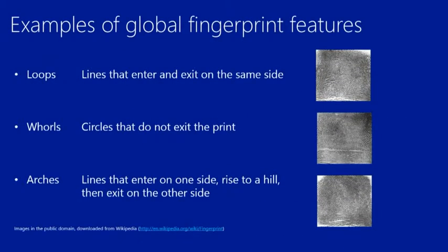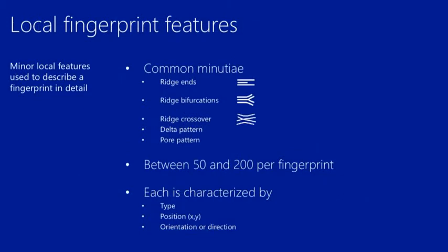Global fingerprint features include loops — lines that enter and exit on the same side; whorls — circles that do not exit the print; and arches — lines that enter on one side, rise, and exit on the other. Local fingerprint features, the minutia, include ridge endings, ridge bifurcations, ridge crossovers, delta patterns, and pole patterns. Typically, there are about 50 to 200 minutia per fingerprint — the more, the better. Each minutia has a type, a position in the fingerprint, and an orientation.